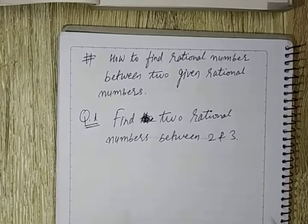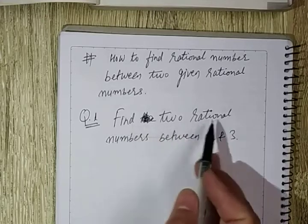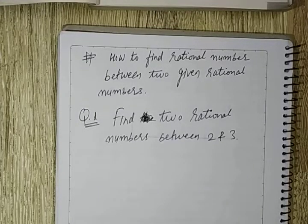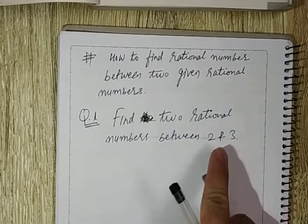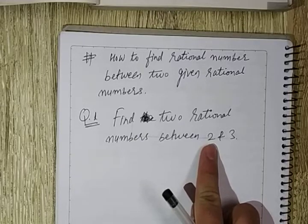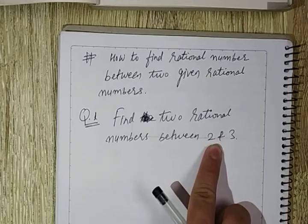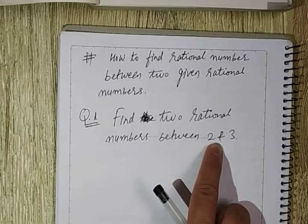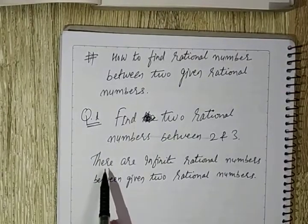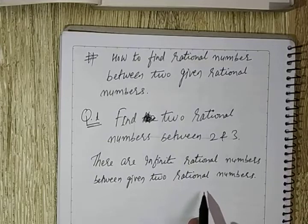Question number one: find two rational numbers between 2 and 3. I'll tell you the method and concept. The first thing I want to tell you is there are infinite rational numbers between any two given rational numbers. That means between any two given numbers you can find infinite rational numbers. Different students may get different answers, and all answers can be correct as long as the method is right. There are infinite rational numbers between given two rational numbers.